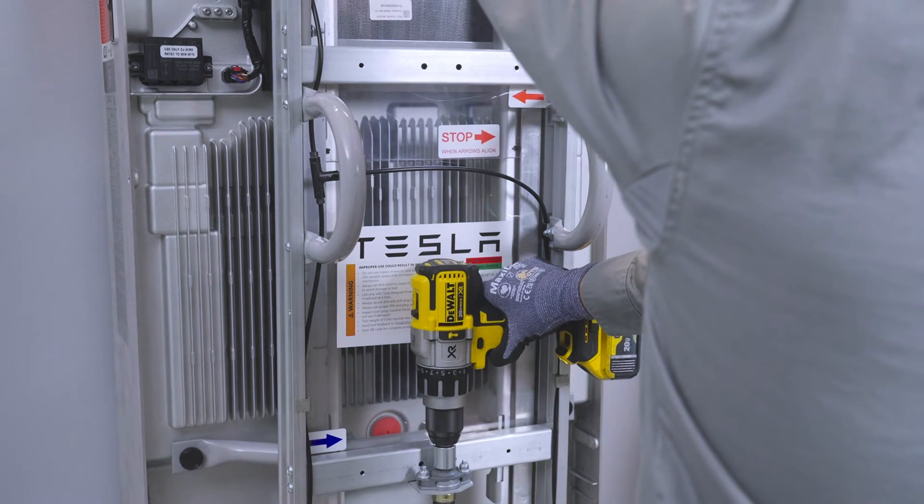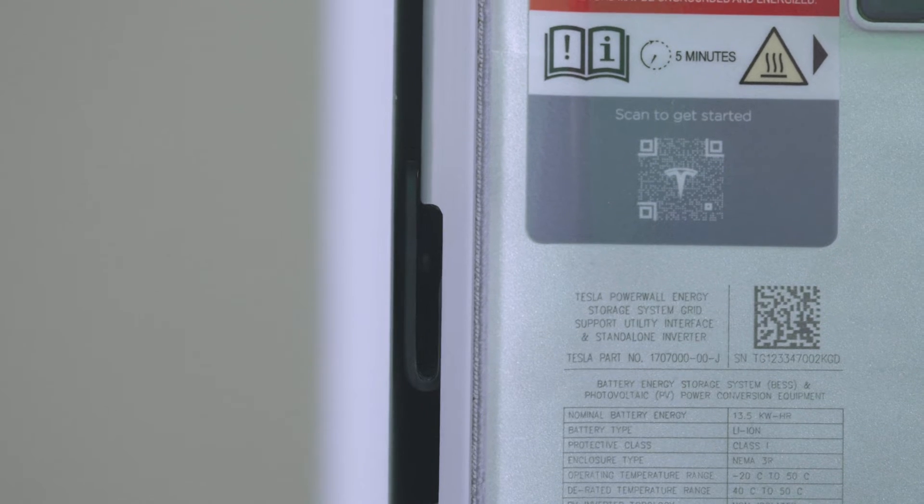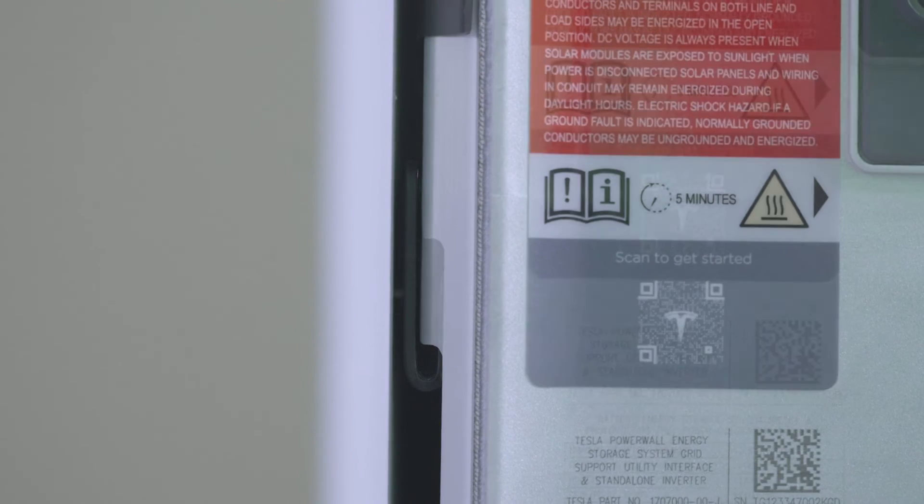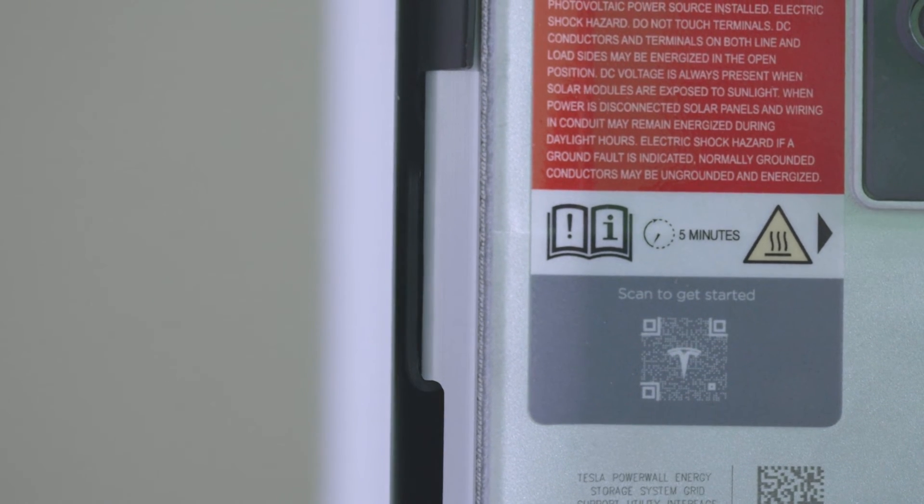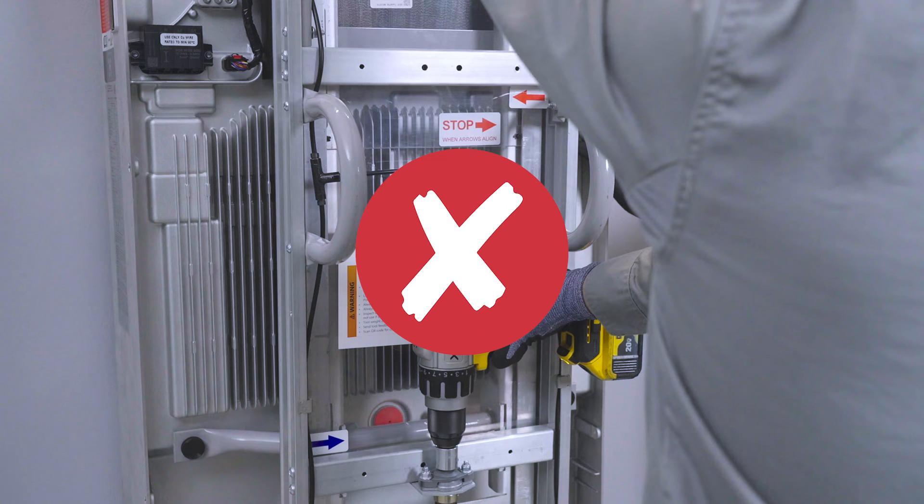Use the drill to lower Powerwall 3 onto the wall bracket. Ensure that all four cleats are fully seated onto the mounting bracket. Do not continue to lower the Dolly once Powerwall 3 is engaged on the bracket. This may cause damage to the Dolly.